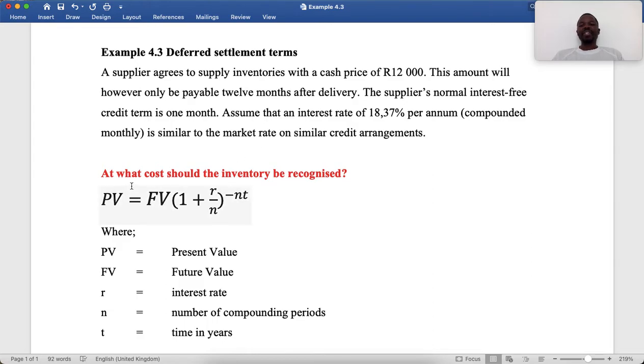At what cost should the inventory be recognized now? So we need to recognize the inventory at the discounted cost of $12,000 using the interest rate of 18.37% compounded monthly.